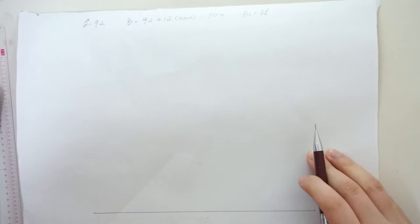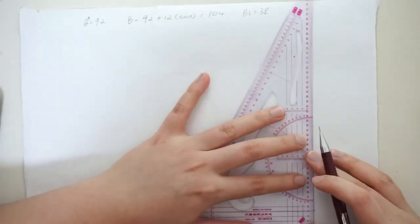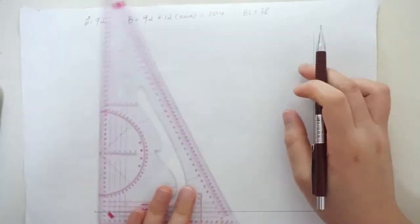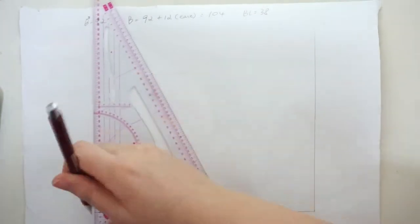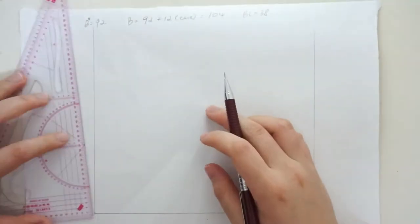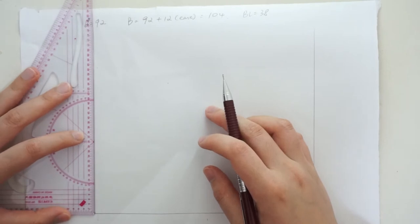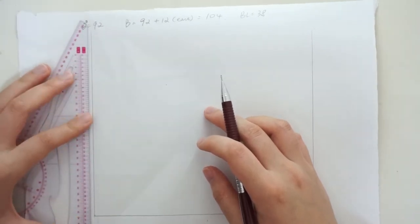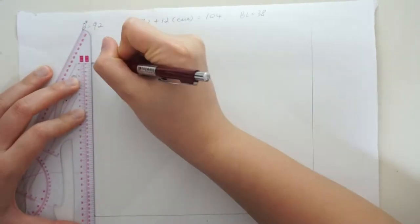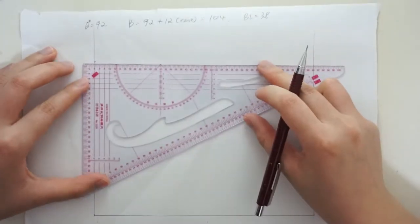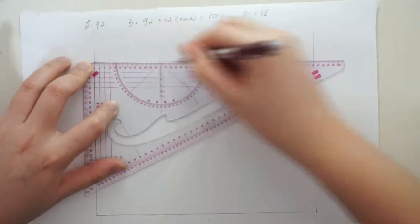First, we'll construct a rectangle. The length is half of B. For me, it's 52cm and the width or height is your back length BL. For me, it's 38cm. When we draft a basic pattern, we usually draft half of it because we assume everything is symmetrical. It's also faster and easier. If your left and right measurements are slightly different, then you can alter the pattern by doing a fitting afterwards.